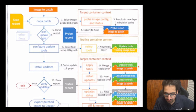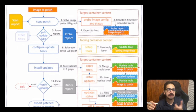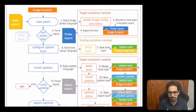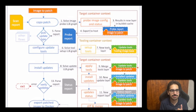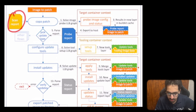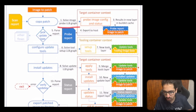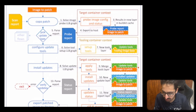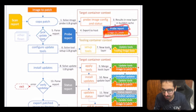Internally, Copa solves the image probe LLB graph. LLB — Binary Intermediate Format — is what BuildKit builds are based on. It defines the dependency graphs for all processes running as part of the build, enabling efficient caching and concurrency. You have a scan report, Copa patches it, gets the LLB graph, targets the container context, and the result is a new layer in the BuildKit cache — producing a probe report for the image that has to be patched.